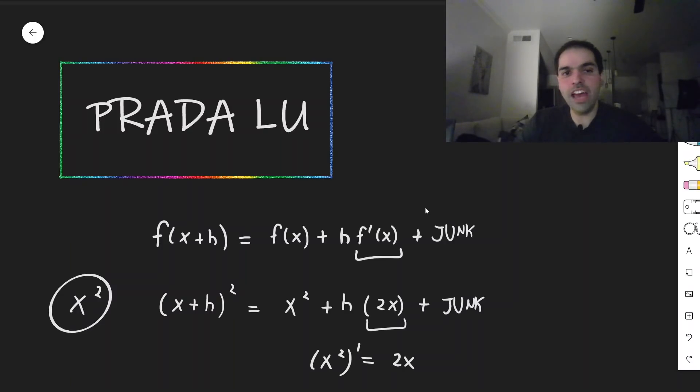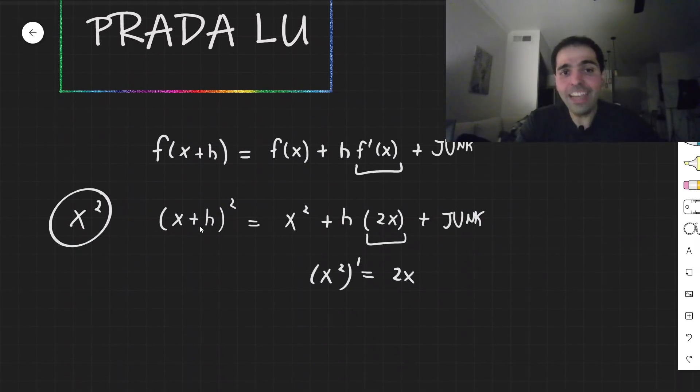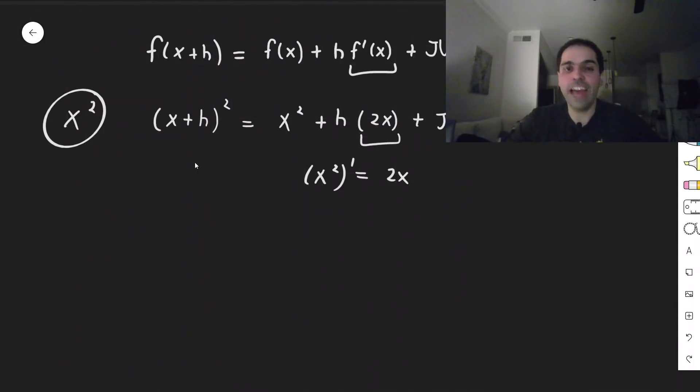Because you see, we have f of x plus h equals f of x plus h times some number, and that number is the derivative of f. Now using this, we can actually show the product rule. So for this, take f times g, and consider f times g of x plus h.